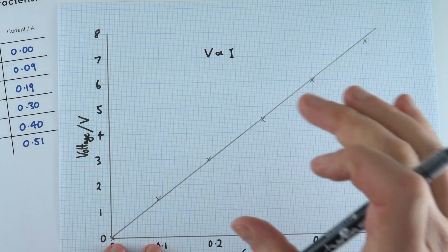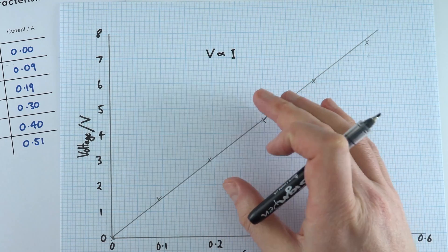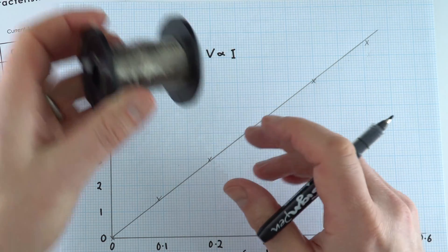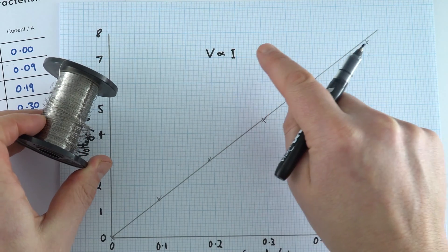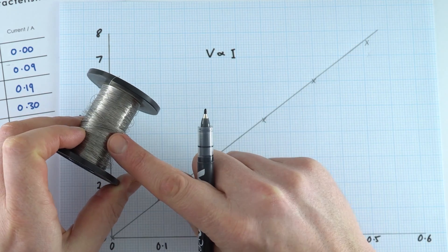In actual fact, this demonstrates Ohm's law that says if you've got a conductor at a constant temperature, then the potential difference is going to be proportional to the current for an ohmic conductor.